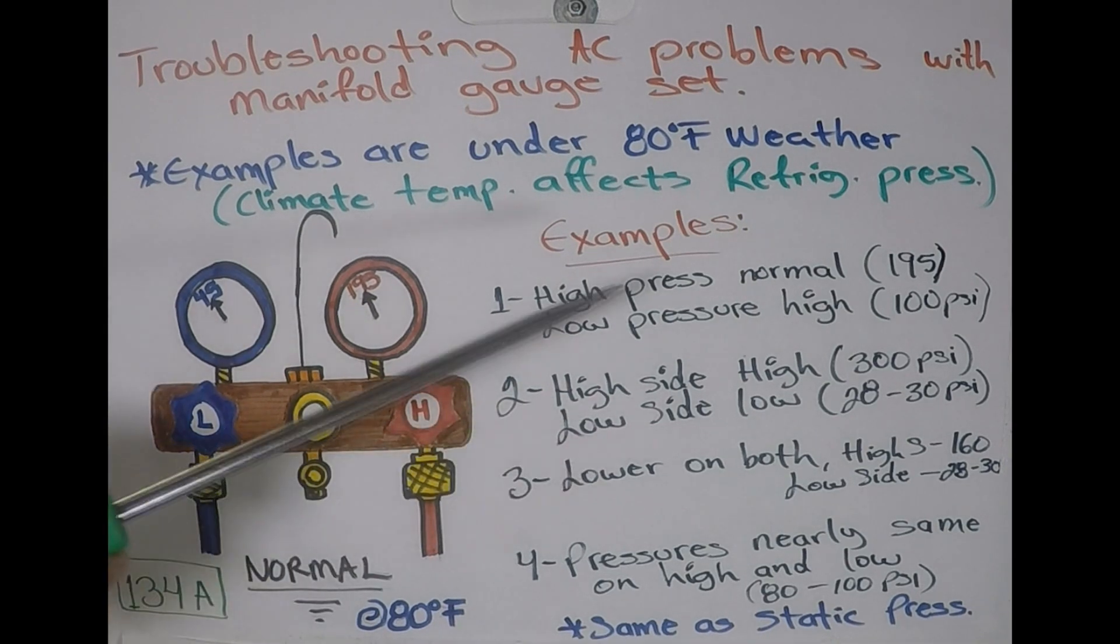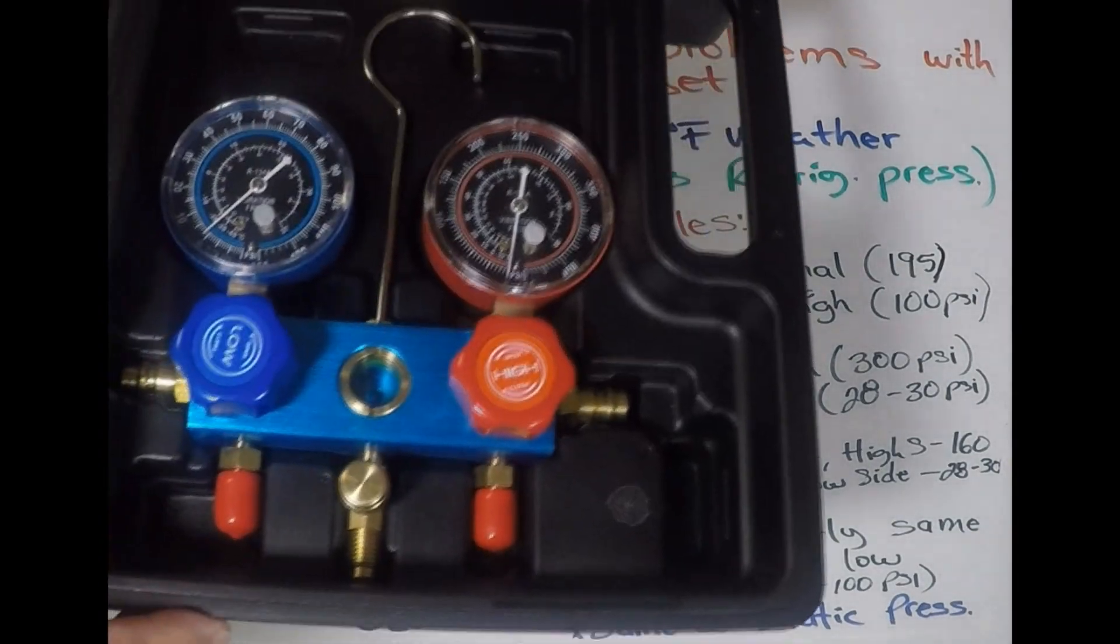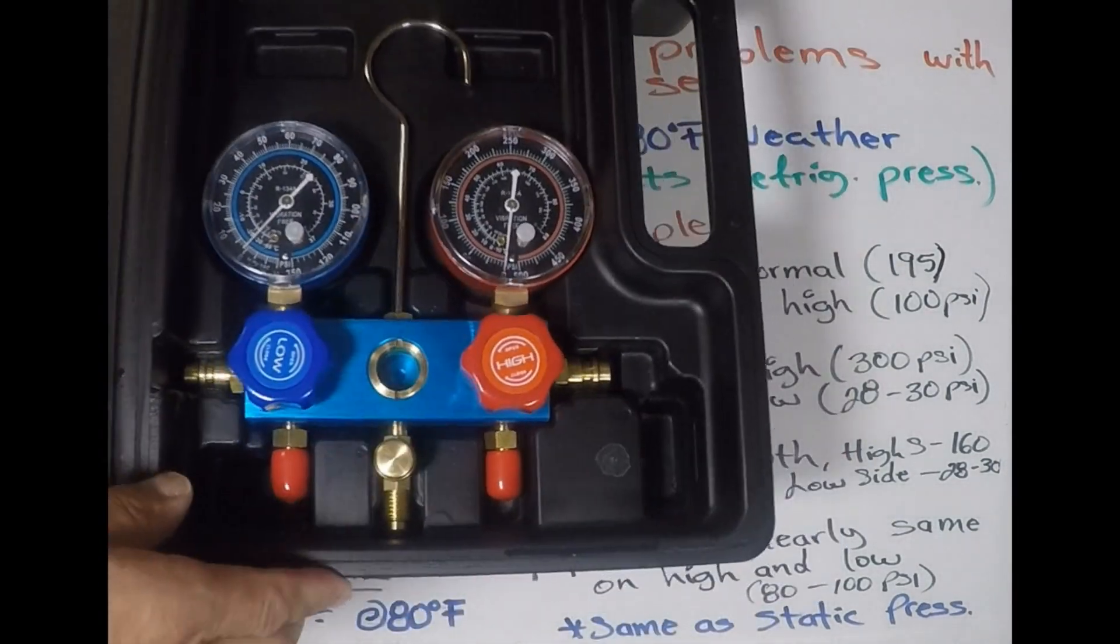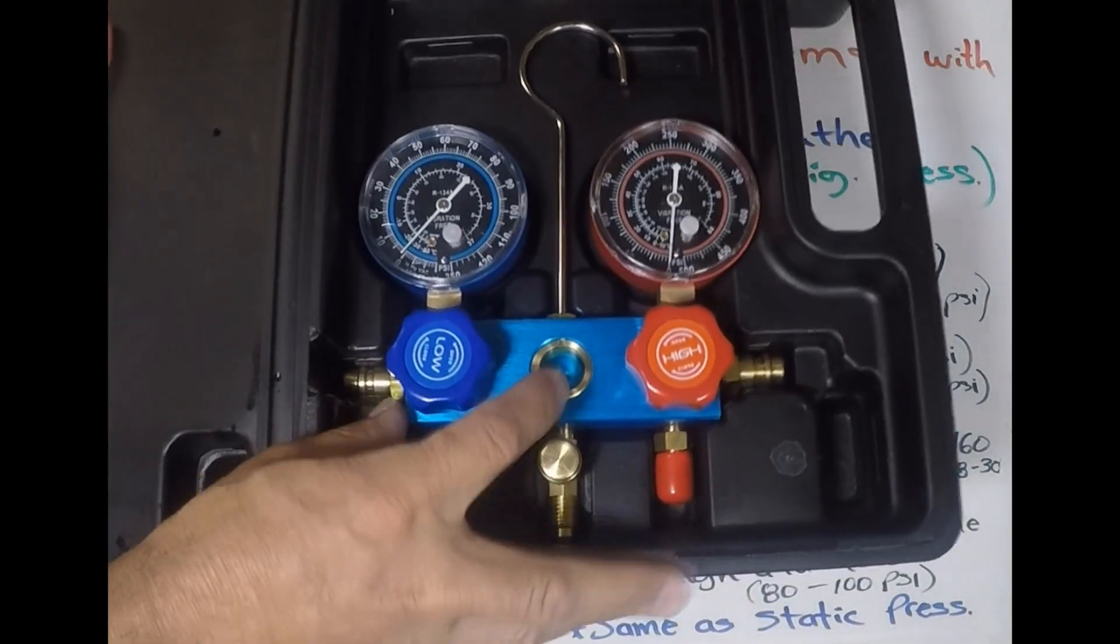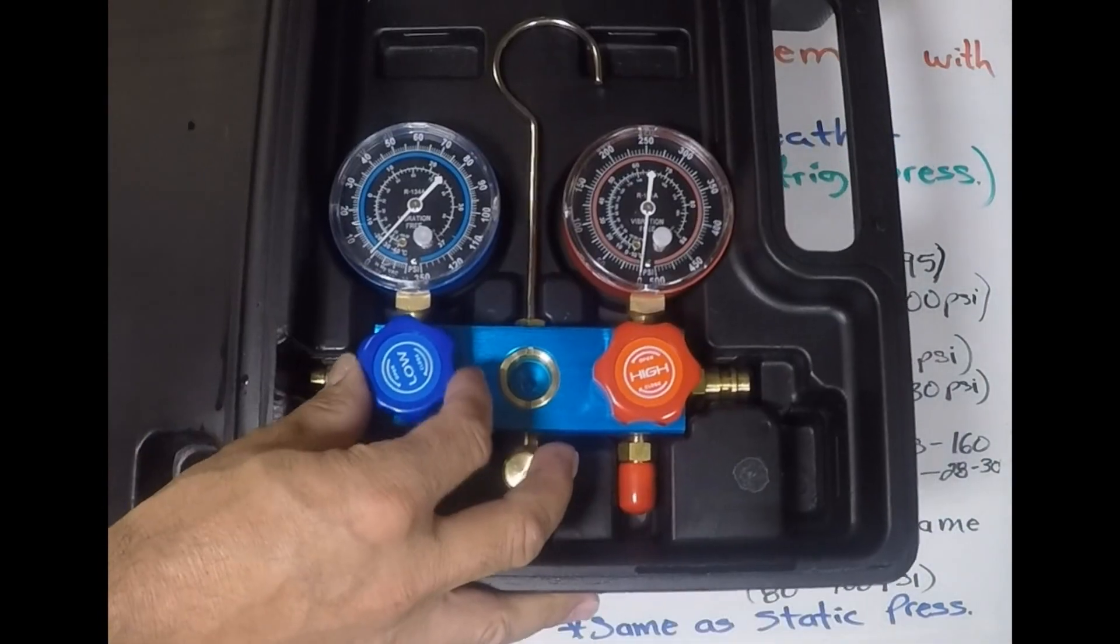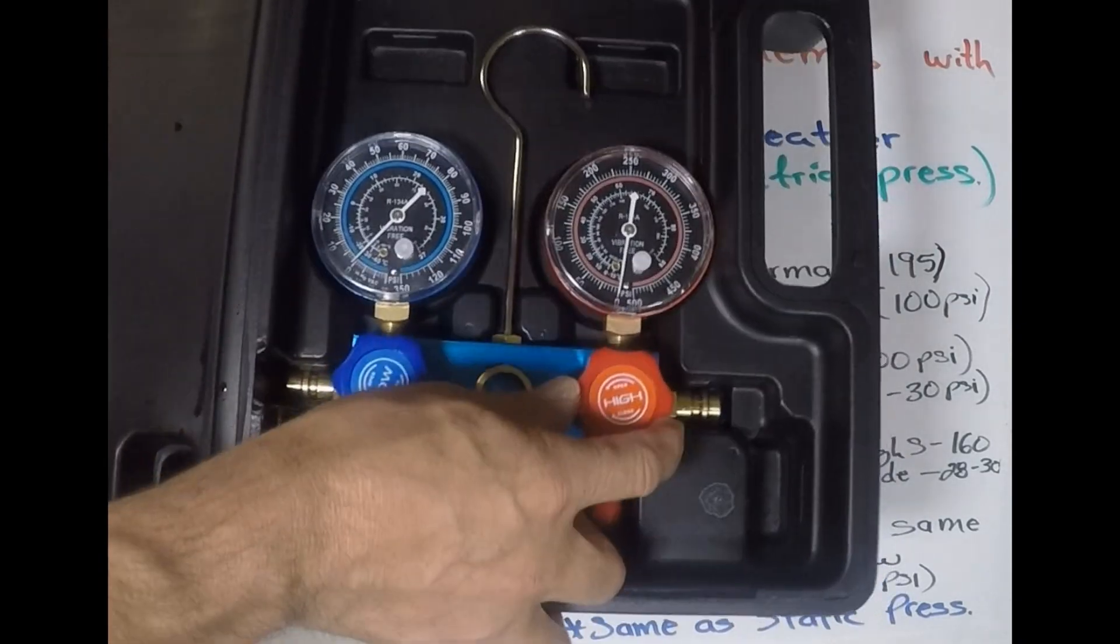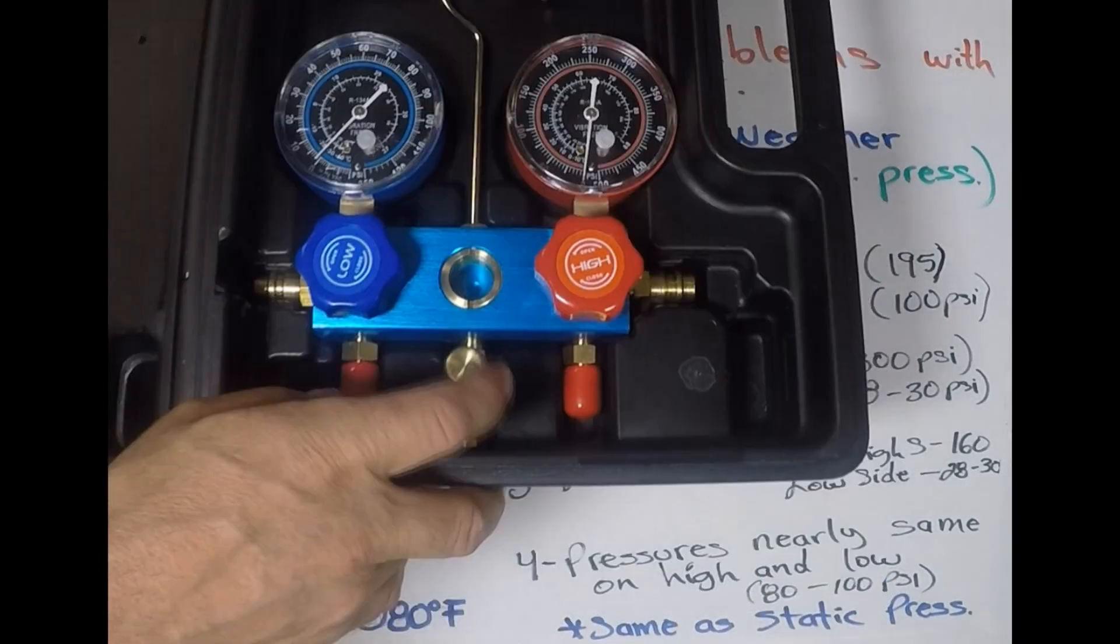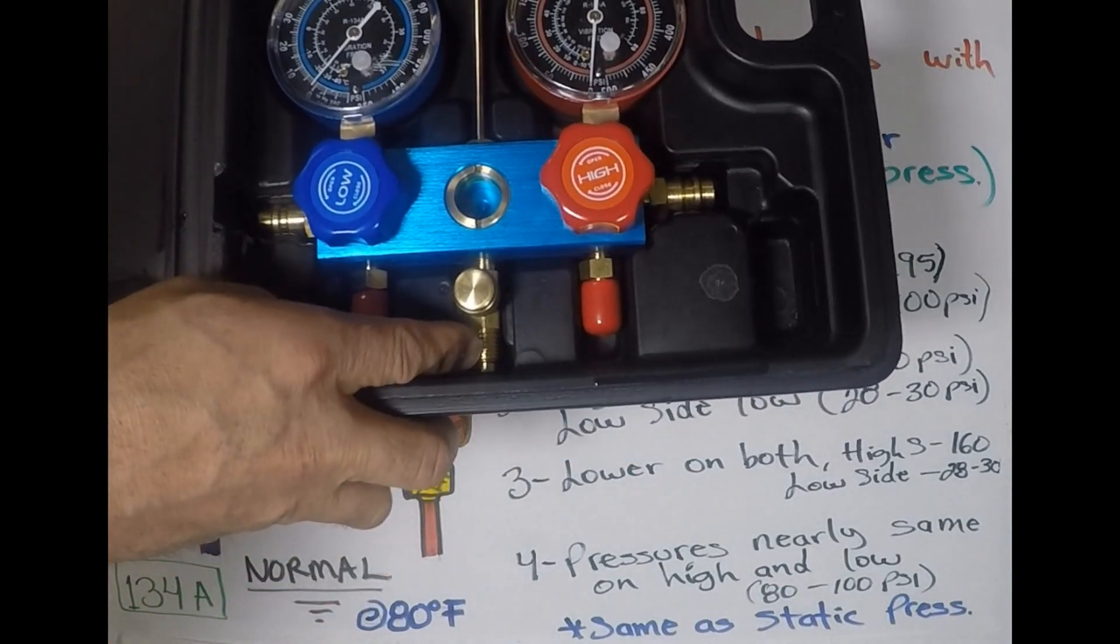Okay, so right before we go over the examples, let's go over some safety precautions. When you're conducting a test, these valves need to be closed. And to close them, you just turn them clockwise, the same way you turn any other valve and you close them. And this cap right here, just put it over here for safety.